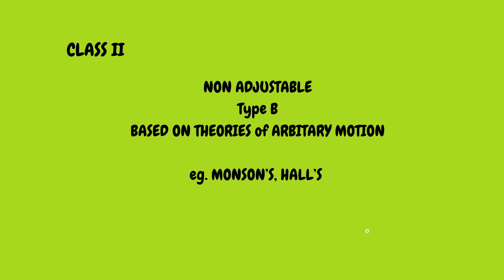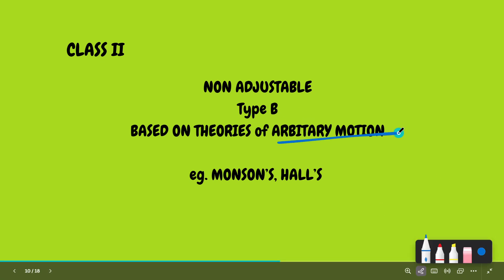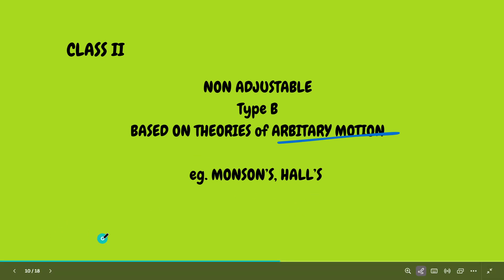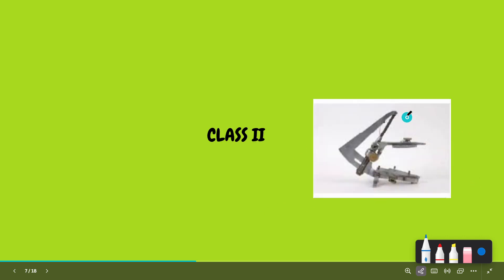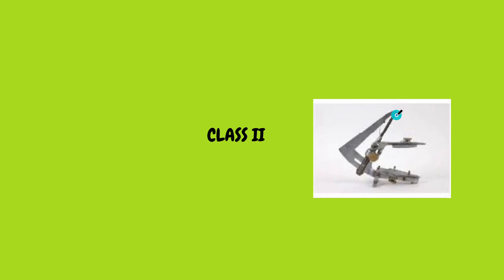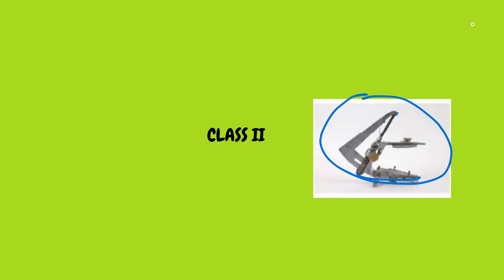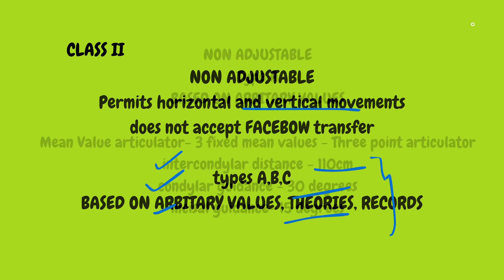Type B of class 2 is based on arbitrary theories of motion, like Monson's theory. The first picture shown is the Monson articulator. Monson considers the glabella as the center point — that is the point between your eyebrows. From there, if you draw an imaginary sphere, the surface of that sphere will coincide with the occlusal and incisal surfaces of the teeth. That is what ideal occlusion looks like according to Monson, so that articulator is called the Monson articulator.